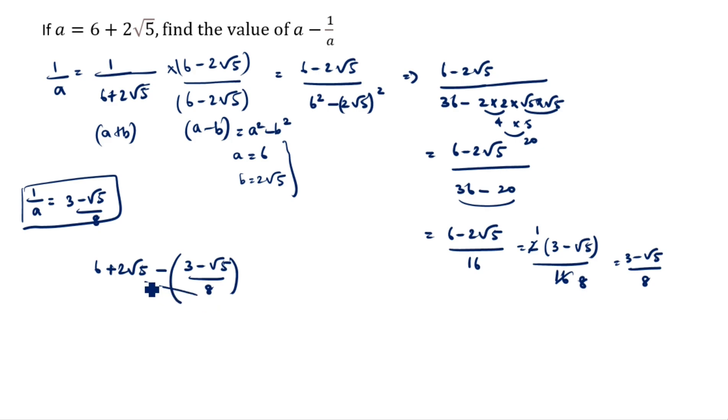Now you can cross multiply. So 8 you can take it as common. So 6 times 8 is 48, 8 times 2 is 16 root 5 minus 3, minus into minus is plus root 5. So simplify this one.